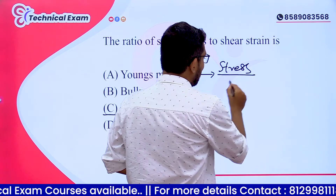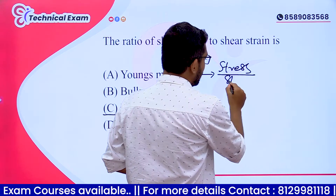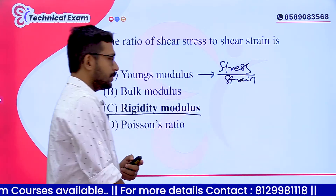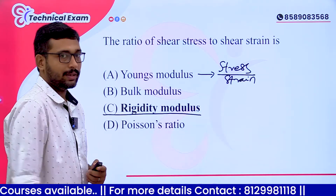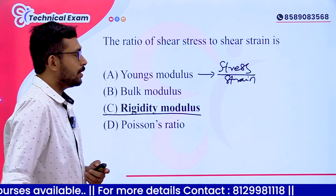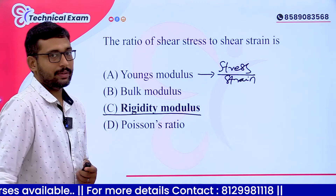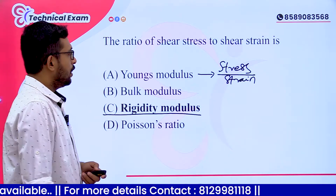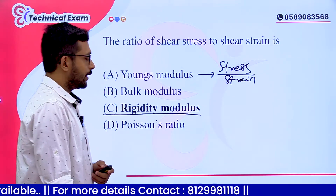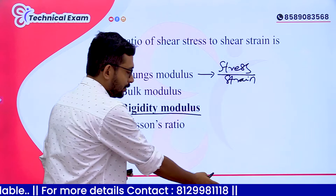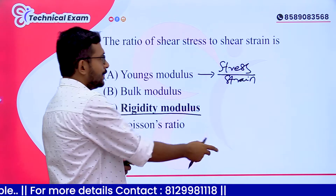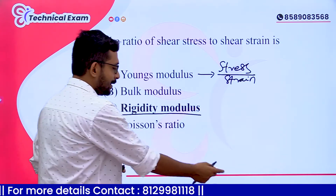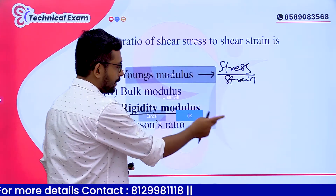If you do stress divided by strain, that is Young's modulus. Bulk modulus means volumetric stress divided by volumetric strain. And shear stress to shear strain is called rigidity modulus.